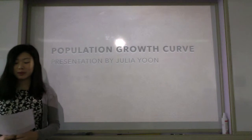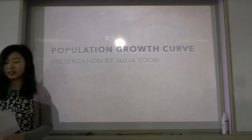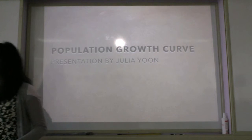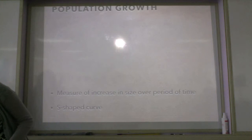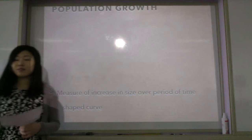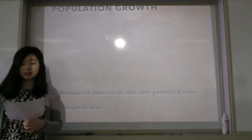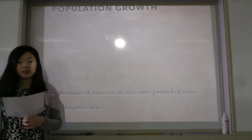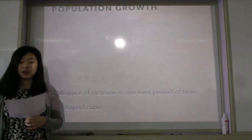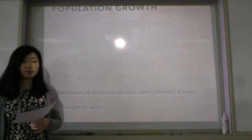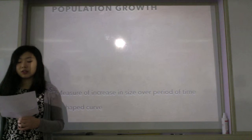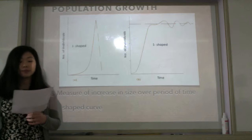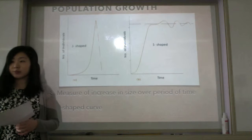I'll be explaining the shape of an S-shaped population growth curve. Growth of a population is measured as an increase in its size over a period of time and may show certain patterns of growth over time. There are two patterns of population growth forms: J-shaped and S-shaped growth forms. Today I'll be focused on the S-shaped curve.